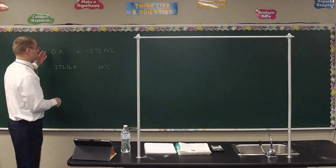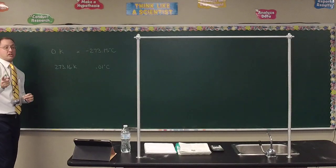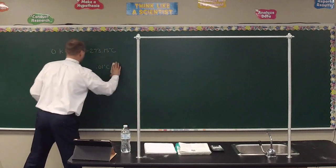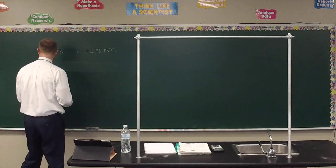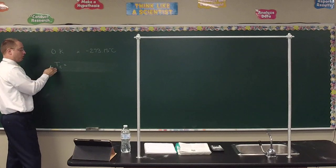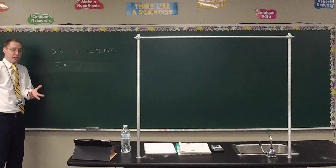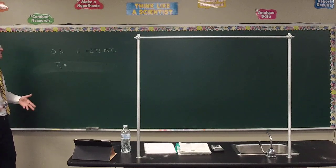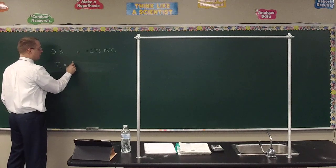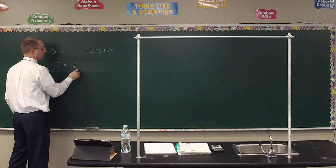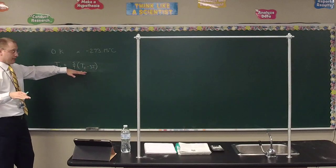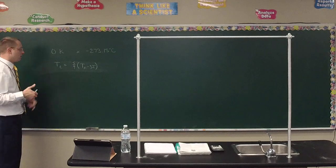Let's review the temperature conversions we practiced in homework. For Celsius to Kelvin, we just use the 273.15 offset — Kelvin has bigger numbers because it doesn't go negative while Celsius does. To convert Fahrenheit to Celsius — the most common one since we'll often be given Fahrenheit — the formula is: C = (F − 32) × 5/9. We subtract 32 first to bring us to the zero point, then multiply by 5/9 because for every 5 Celsius degrees there are 9 Fahrenheit degrees.